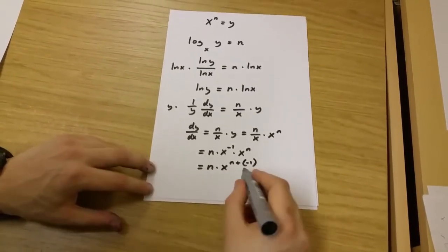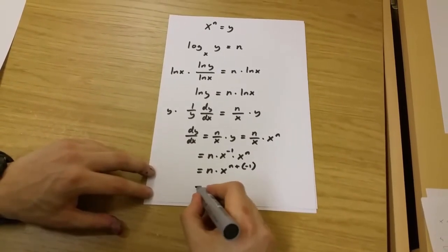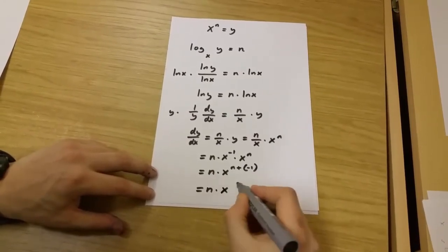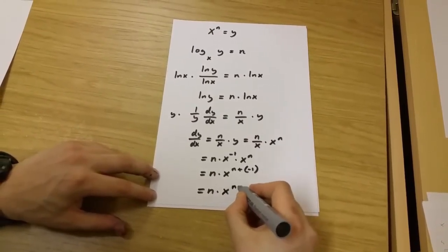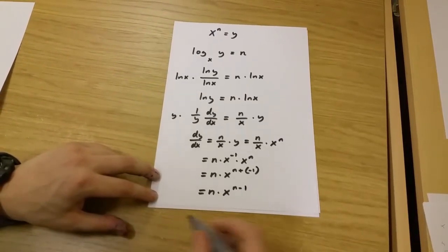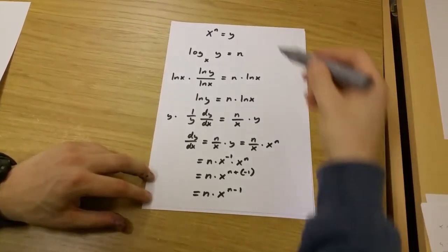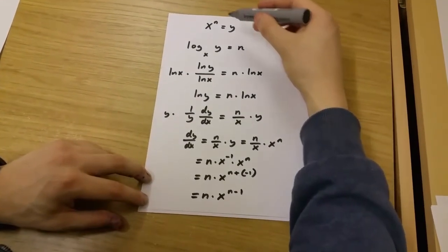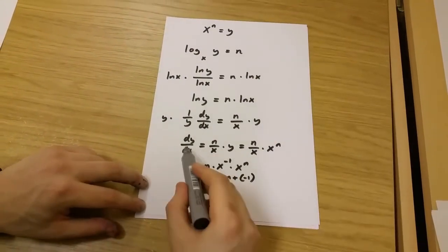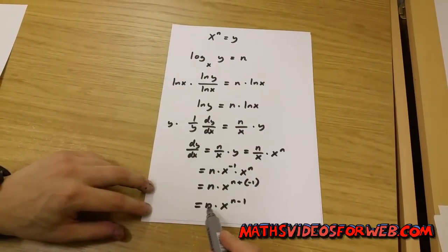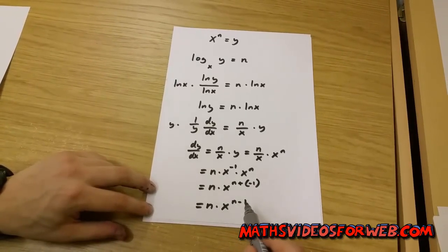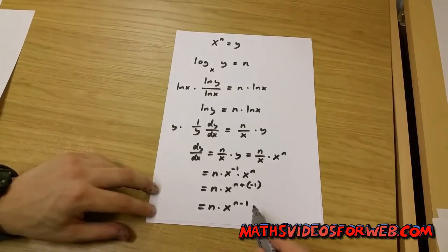And this ends up being n multiplied by x to the power of n minus 1. So we've proven that if y equals x to the power of n, dy over dx equals n multiplied by x to the power of n minus 1.